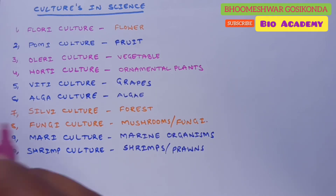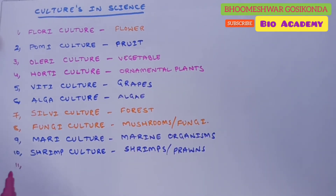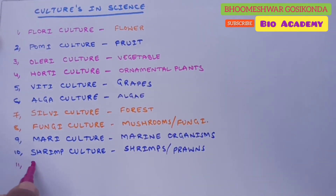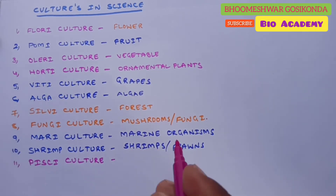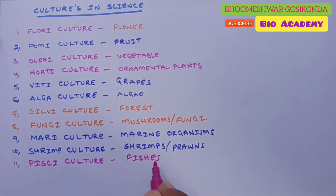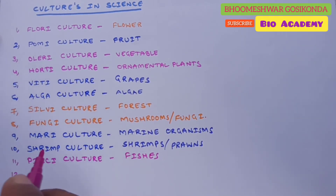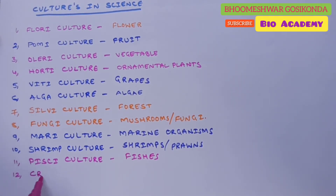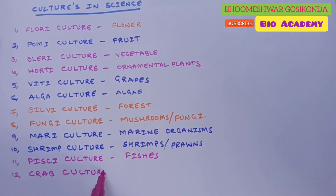Next is pisciculture, also named fish farming. Pisciculture is the rearing of fish for food in enclosures such as fish ponds or different types of artificial water reservoirs.